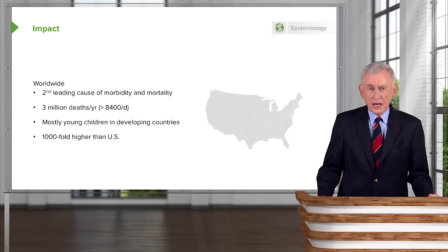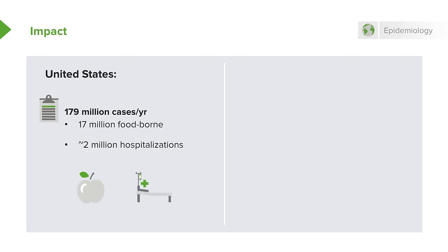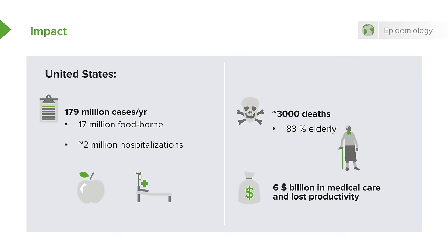Diarrhea is a thousand-fold higher in developing countries than in the United States. But it's still a problem in the US with 179 million cases a year, 17 million of which are foodborne. About 2 million of those instances require hospitalization, and 3,000 deaths is a sizable amount — most occurring among elderly persons. The cost totals 6 billion dollars in medical care and lost productivity every year.